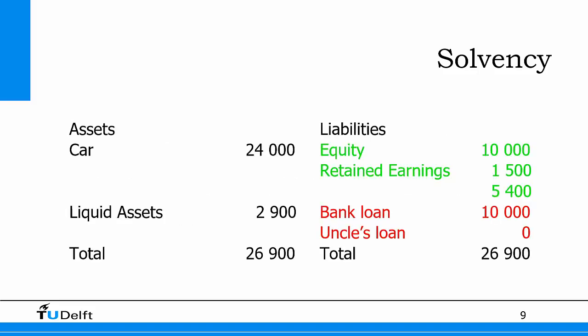Looking at the taxi company example, the equity is all retained earnings plus the original equity, divided by the total debts, which are the bank loan and the uncle's loan. In this case the solvency ratio is more than 100%, which is an indicator that it might be a good time to attract more debt to the company, because a larger share of debt gives a lower WACC — meaning it's time to invest more money and take on more debt.